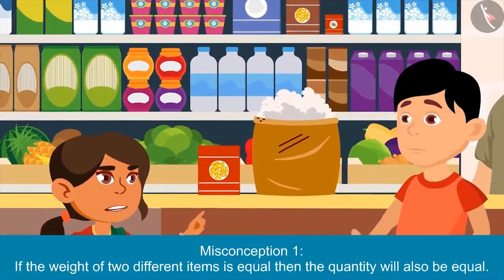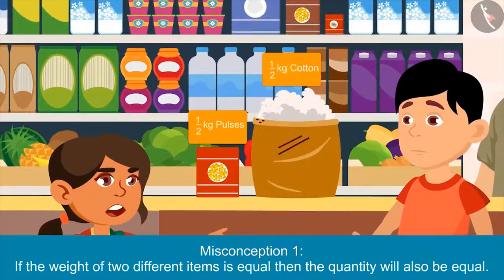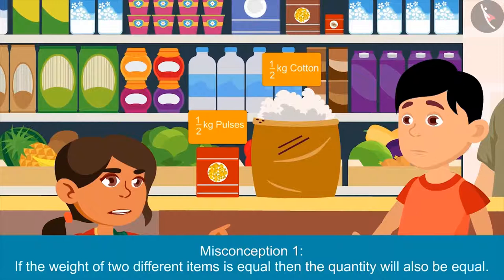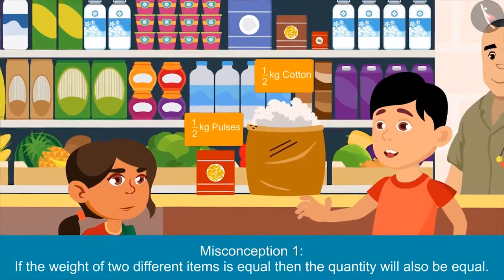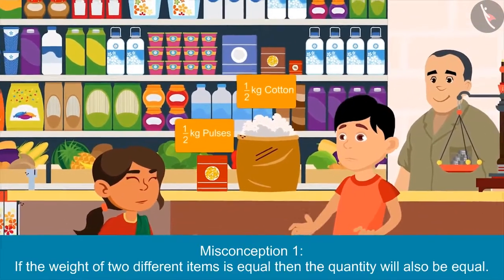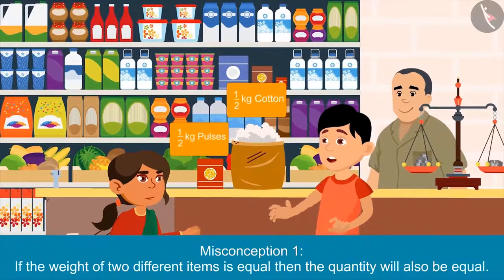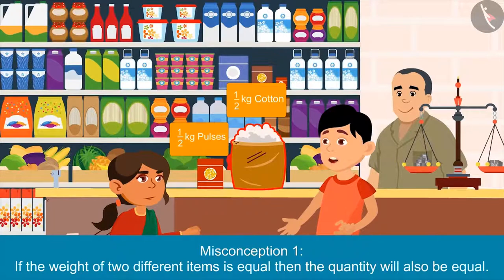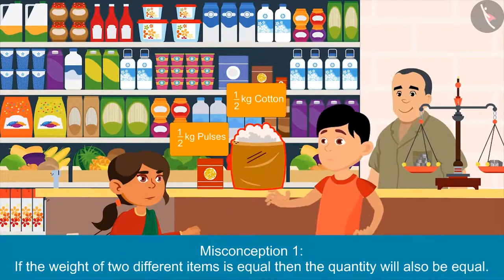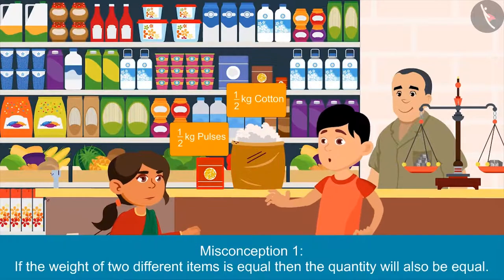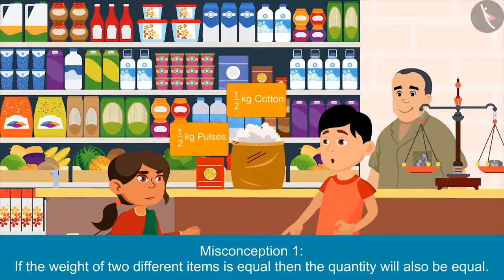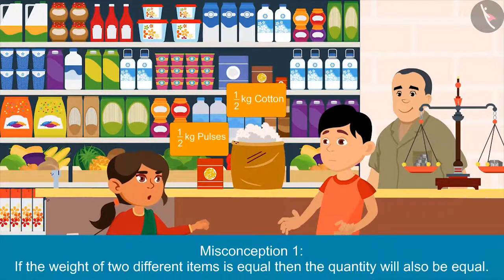Brother, look at these two bags. Both of them have half a kg written on it, but the quantity of cotton is much more than the quantity of pulses. Yes, Neetu, you are absolutely correct. Brother, how is it possible? This is because cotton is very light, so more amount of cotton is needed to make half a kg of it. Pulses are heavier than cotton, so a very less amount is enough to make half a kg. That's why the amount of cotton is so large.